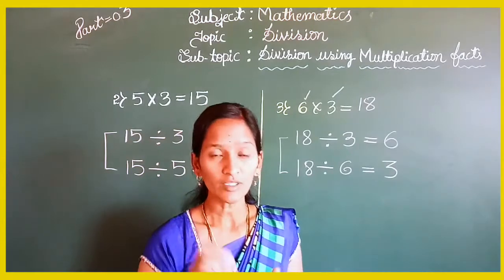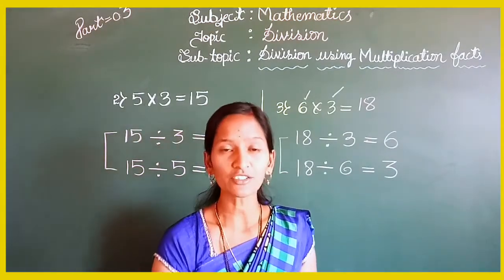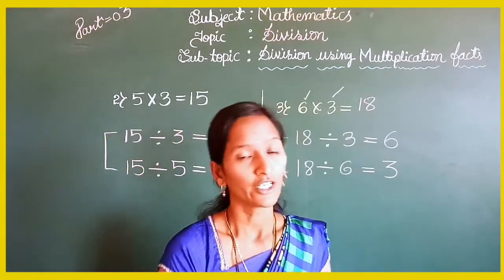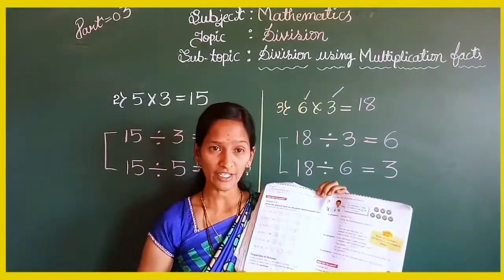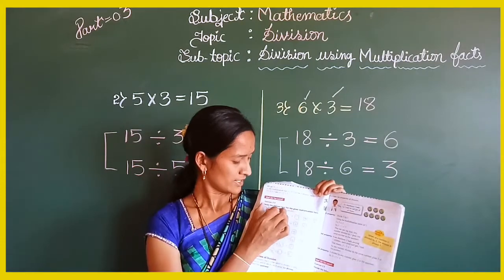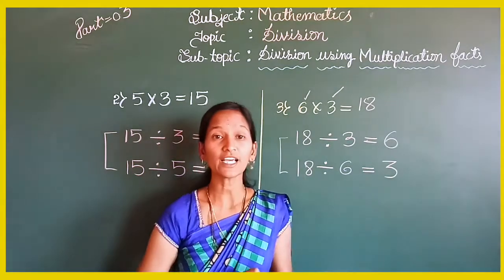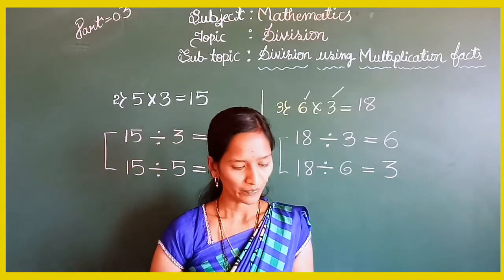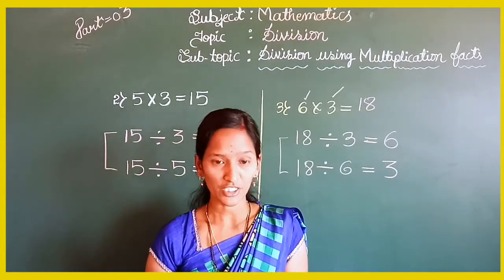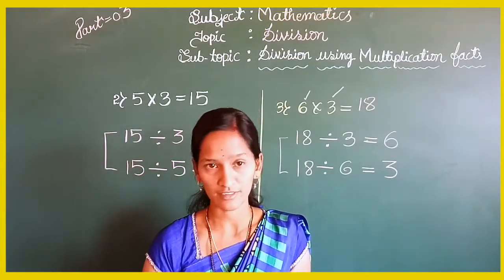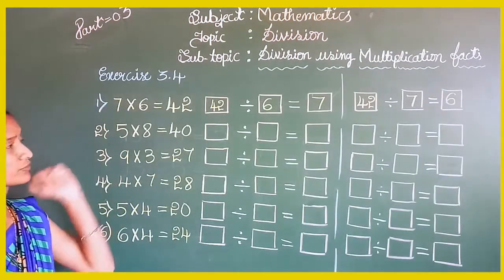Now I will move to the textbook activity. It is on page number 104 in your textbook — exercise number 3.4. The headline reads: 'Write the division facts for the given multiplication facts.' Come to exercise 3.4.